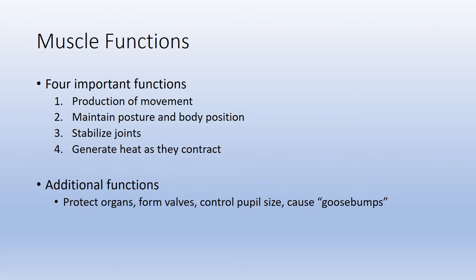The third function is joint stabilization. In the last unit we learned about joints, and now we will see the specific muscles that stabilize them. Lastly, a byproduct of muscle contraction is heat — muscle is capable of producing heat as it contracts. When you shiver in the cold, those are quick muscle contractions generating heat to increase body temperature. Other functions include abdominal muscles protecting organs, valves in veins, a ring of smooth muscle in the eye controlling pupil size, and the small muscle around a hair follicle that causes the hair to stand on end.